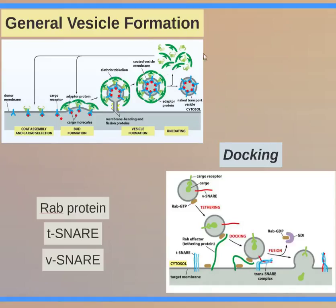Once the vesicle travels to where it needs to go, it docks. You have T-snares and V-snares — T is for target snare, and V-snare is a vesicle snare. The vesicle has a V-snare and RabGTP, which is a G protein. When it docks onto the Rab effector or tethering protein, the V-snare and T-snares form and grab each other. RabGTP becomes RabGDP, and the membranes fuse together from that energy, dumping the cargo inside.